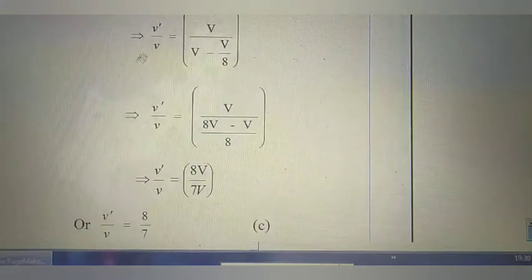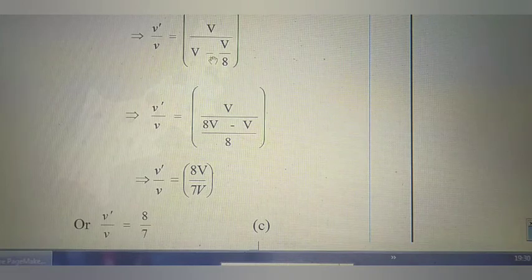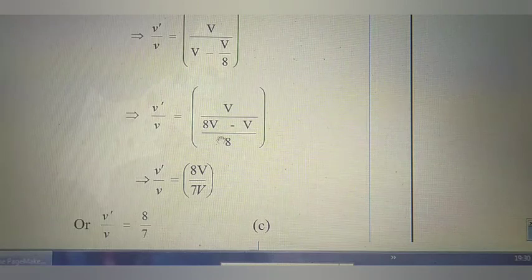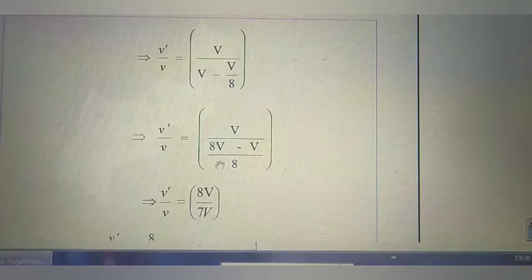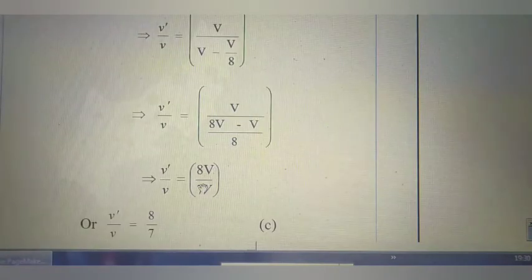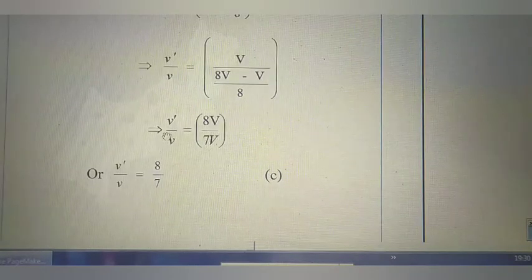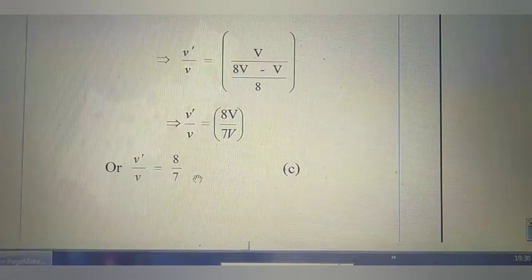So f'/f = v/(v − v_s). The source velocity is 1/8 of the speed of sound, so v_s = v/8. Therefore f'/f = v/(v − v/8). Taking LCM: v/[(8v − v)/8] = 8v/7v = 8/7. So the ratio of apparent to real frequency is 8/7. The right option is C.